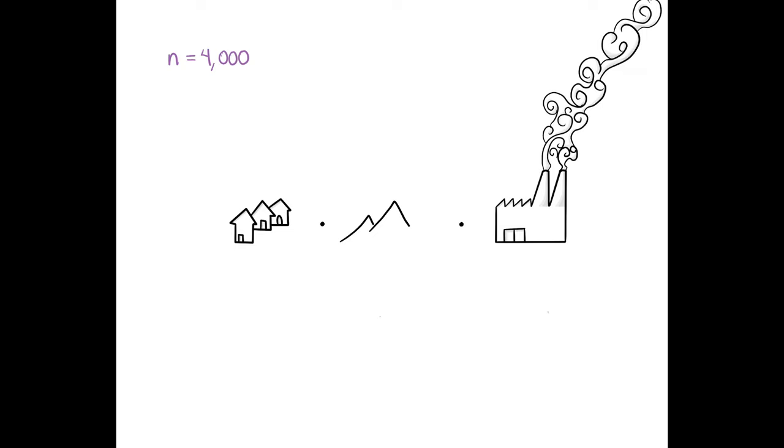Imagine a city with 4,000 residents. Everyone lives in the west and works in the east. A mountain range separates the industrial and residential zones. People must drive around it, through the north or through the south.